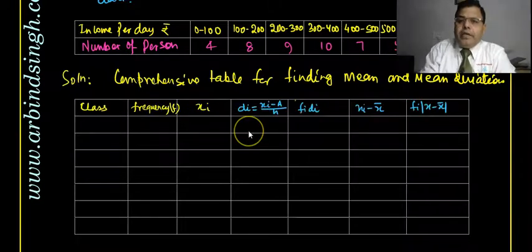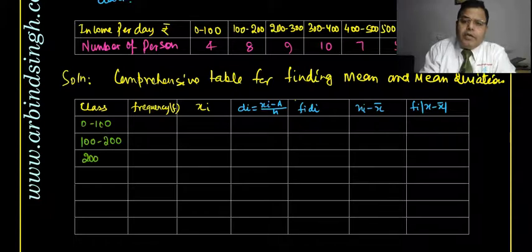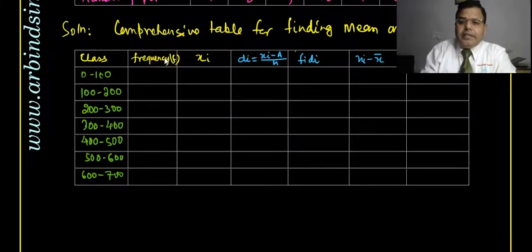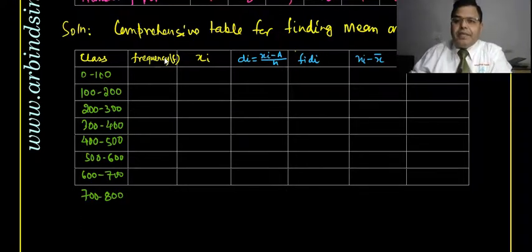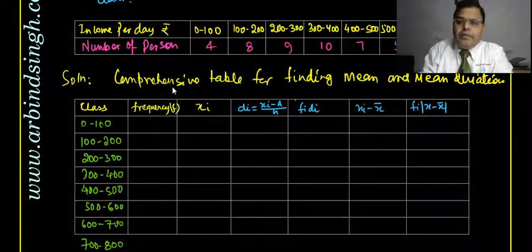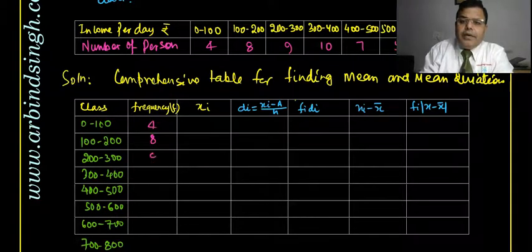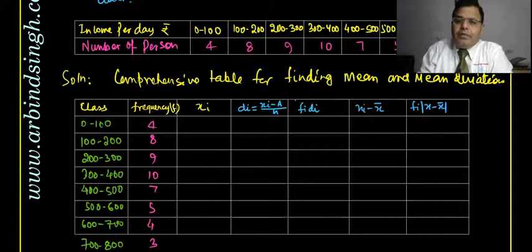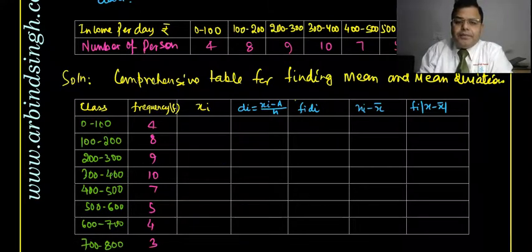The class intervals filled in are: 0–100, 100–200, 200–300, 300–400, 400–500, 500–600, 600–700, and 700–800. The corresponding frequencies are: 4, 8, 9, 10, 7, 5, 4, and 3.